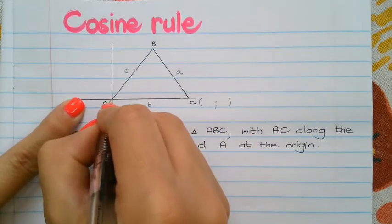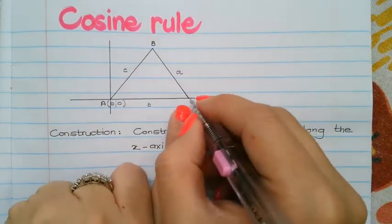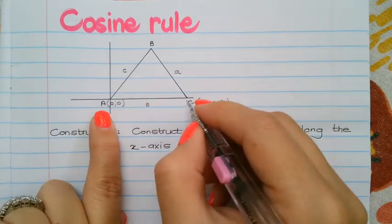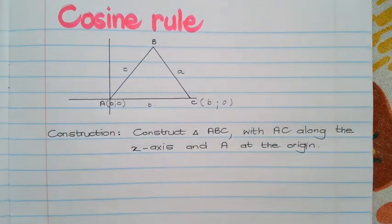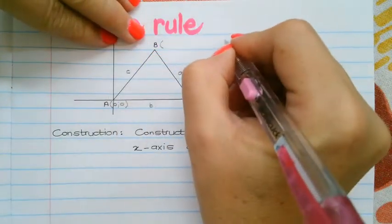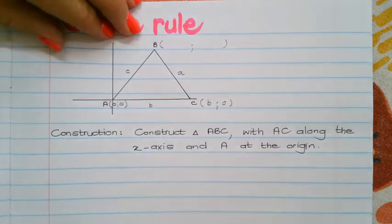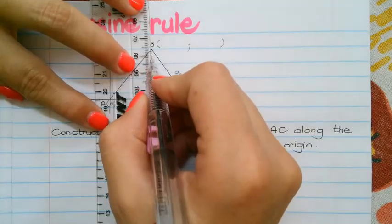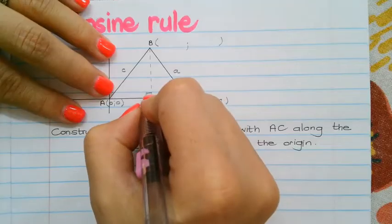So obviously the coordinates of A, 0, and 0. The coordinates of C is on the x-axis, so therefore my y is 0, and then the distance from A to C is small b. So that's the coordinates then there. The next challenge that we have is to determine the coordinates of B. To do that, we will put in a perpendicular height again. But this is not going to be part of your construction because this is actually the part that you will have to study.